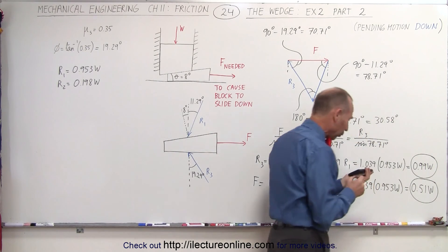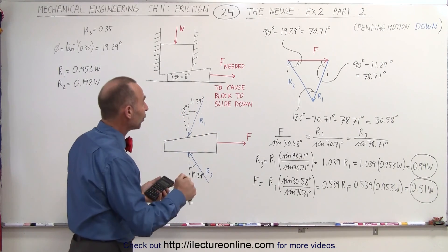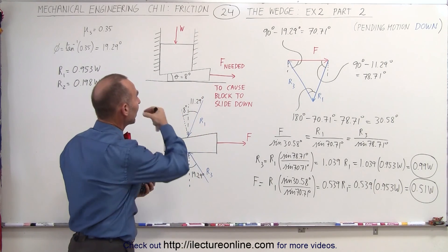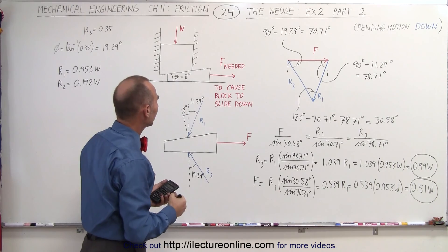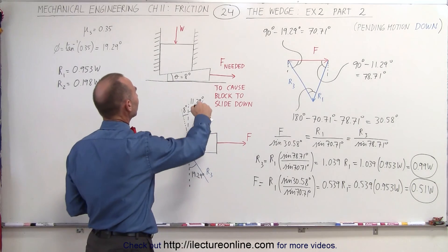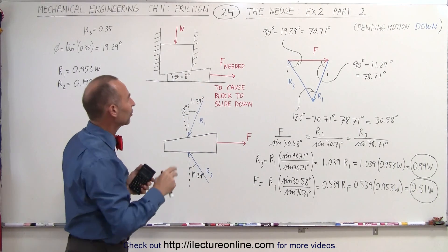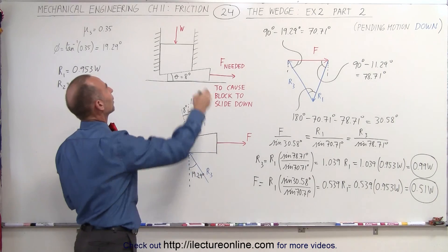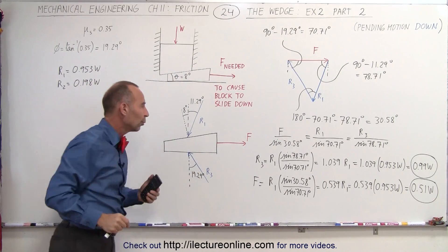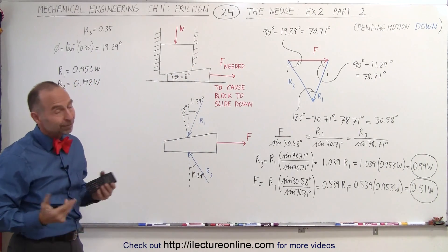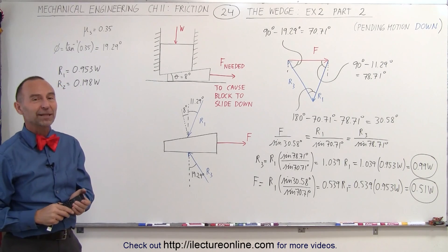So that's the force required to pull the wedge out — it's slightly more than half the weight of the block, and that will allow us to slide the wedge out. If you remember from the previous videos, it took a little bit more than the weight of the block to push the wedge in. That makes sense, and that's how we do a problem like that.